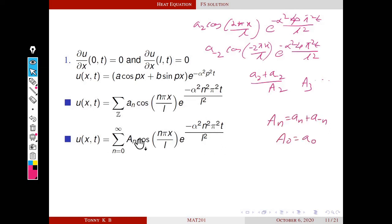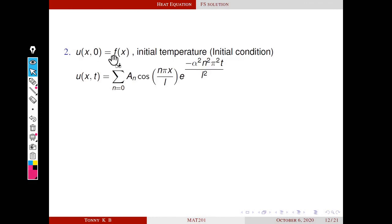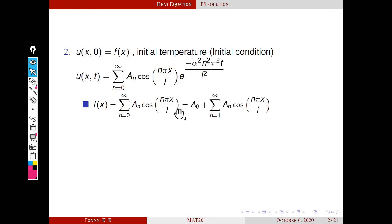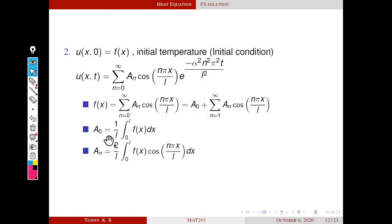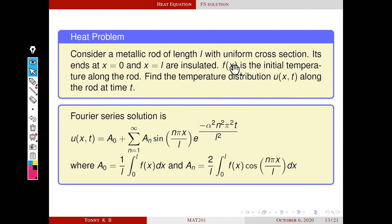To find the coefficients A_n, we apply the initial condition u(x,0) = f(x). Substituting t = 0 gives f(x) = Σ(n=0 to ∞) A_n cos(nπx/L) = A₀ + Σ(n=1 to ∞) A_n cos(nπx/L). This is the half-range Fourier cosine series of f(x). So A₀ = (1/L)∫₀ᴸ f(x) dx and A_n = (2/L)∫₀ᴸ f(x) cos(nπx/L) dx. This is our complete solution for the insulated boundary heat problem.